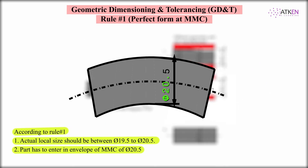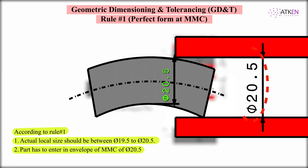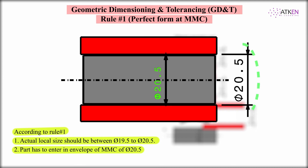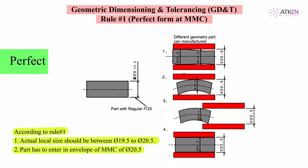For the third case, the actual local size is 20.5 everywhere, which is within the range, but it will not enter into the envelope of diameter 20.5. So this part produced at MMC with form error will not follow Rule 1. Finally, for the fourth part, everywhere the local size is within the range and it enters the envelope of diameter 20.5, so this part with perfect form at MMC will follow Rule 1. That's why Rule 1 is called the Perfect Form at MMC rule.